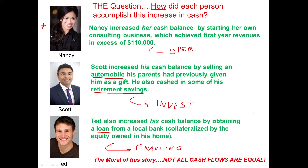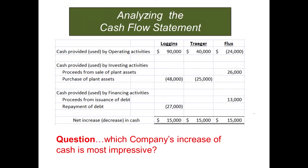Take that analogy and think of it as a business. Let's look at an example. I have an abbreviated cash flow statement for three different companies: Loggins, Traeger, and Flux. Each one of these companies has a net increase in cash of $15,000. Which one is most impressive?